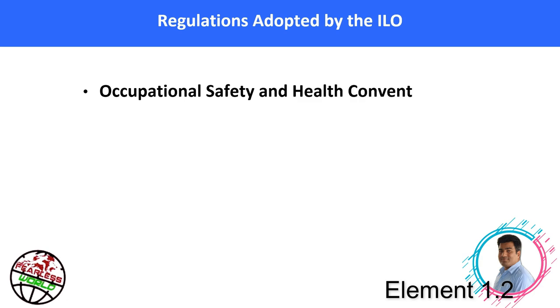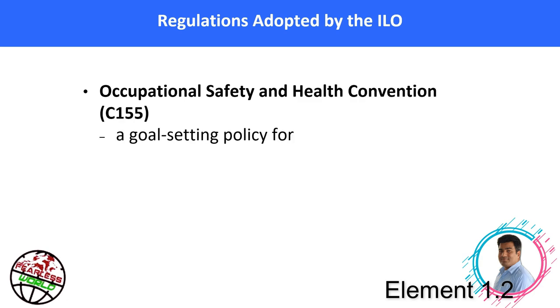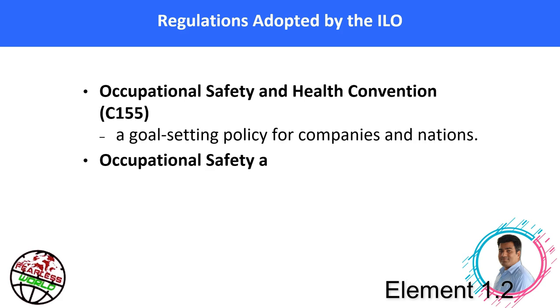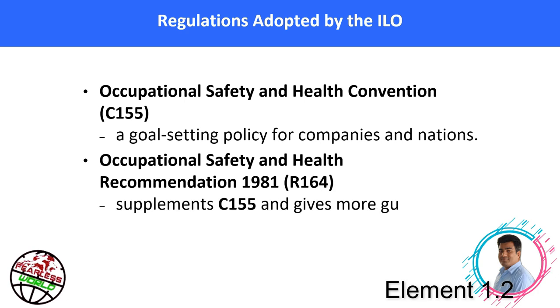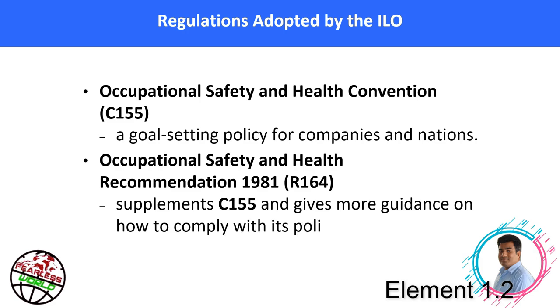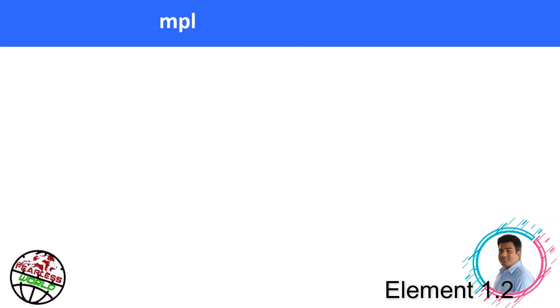Let's see some regulations adopted by the ILO. The Occupational Safety and Health Convention C-155 is a goal-setting policy for companies and nations. The Occupational Safety and Health Recommendation 1981 R-164 supplements C-155 and gives more guidance on how to comply with its policies.